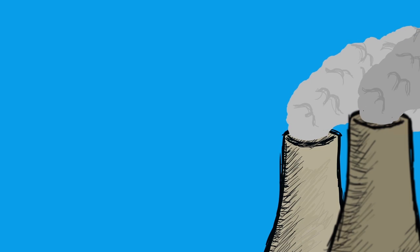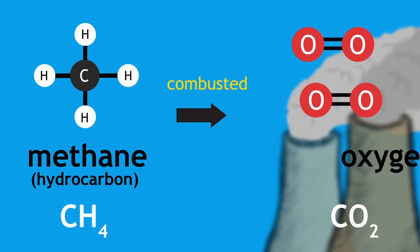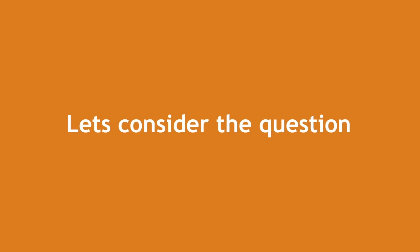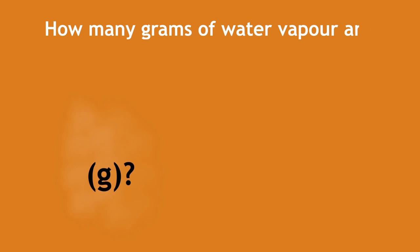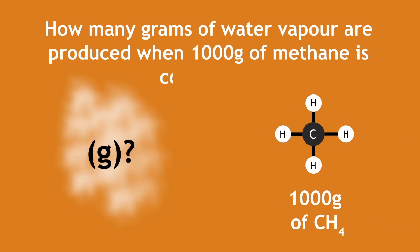In a different power station, methane, a hydrocarbon with the chemical formula CH4, can be combusted with oxygen. Let's consider the question: How many grams of water vapour are produced when a thousand grams of methane is combusted?